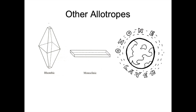Carbon is not the only element that has allotropes. For example, sulphur has a rhombic form and a monoclinic form. Oxygen can also be found as O3, which makes up the ozone layer. And tin has a grey form, a white form and a rhombic form. In the case of many allotropes, a transition temperature exists where one allotrope can be changed into another simply by heating. Unfortunately this is not the case for graphite and diamond — it would be lovely to heat up our tennis rackets or golf clubs and turn them into diamond, but sadly this is not possible.